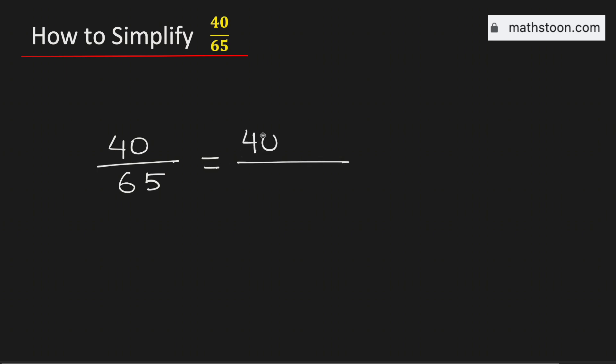See that both the numbers 40 and 65 are divisible by 5. Therefore, to simplify this fraction, we will divide both the numerator and the denominator by 5.